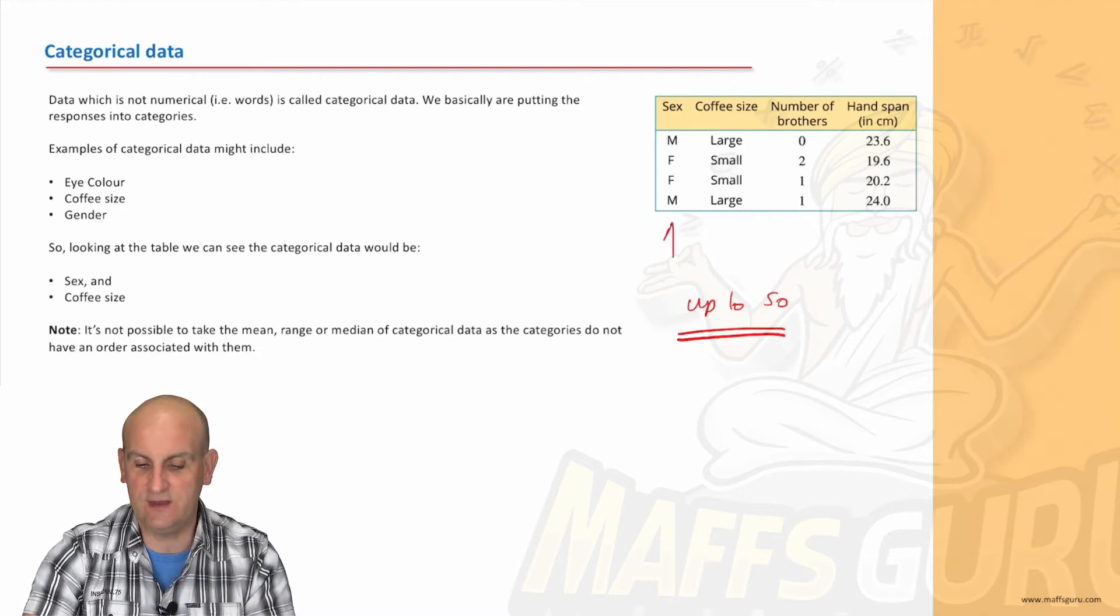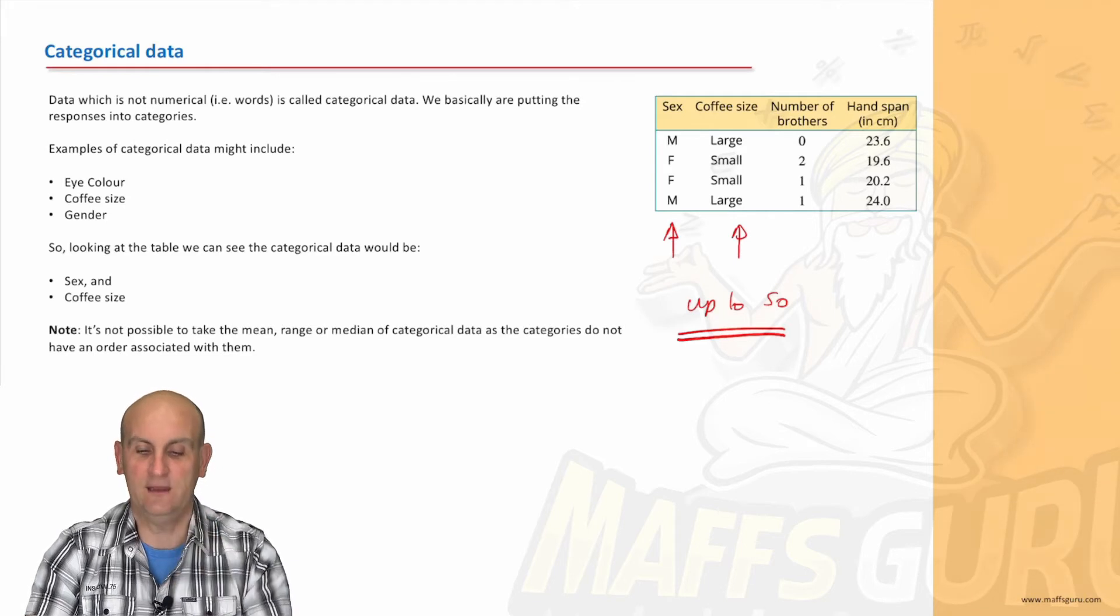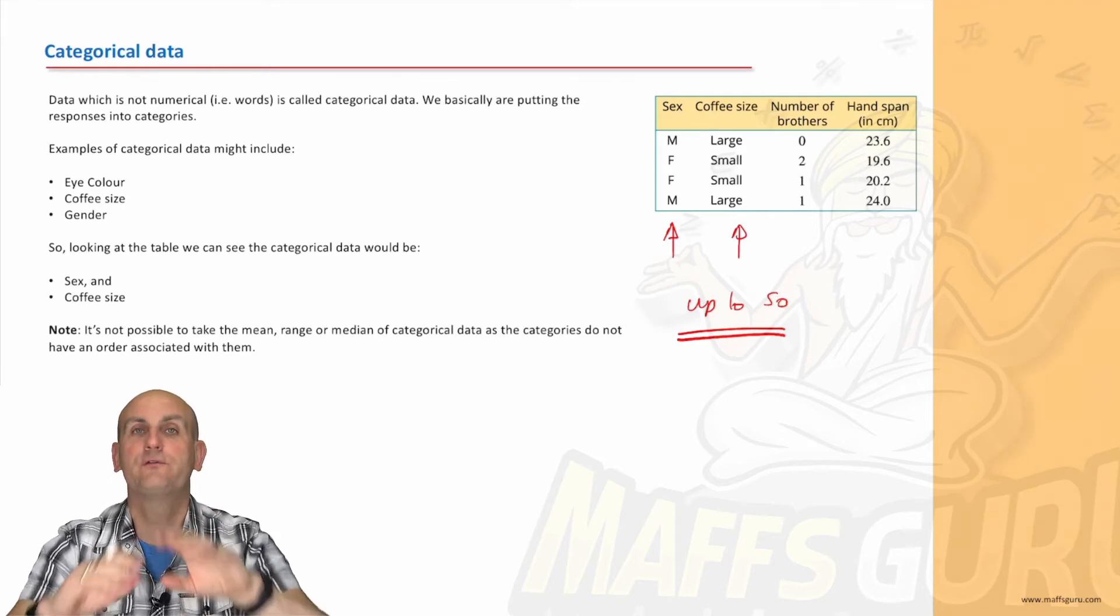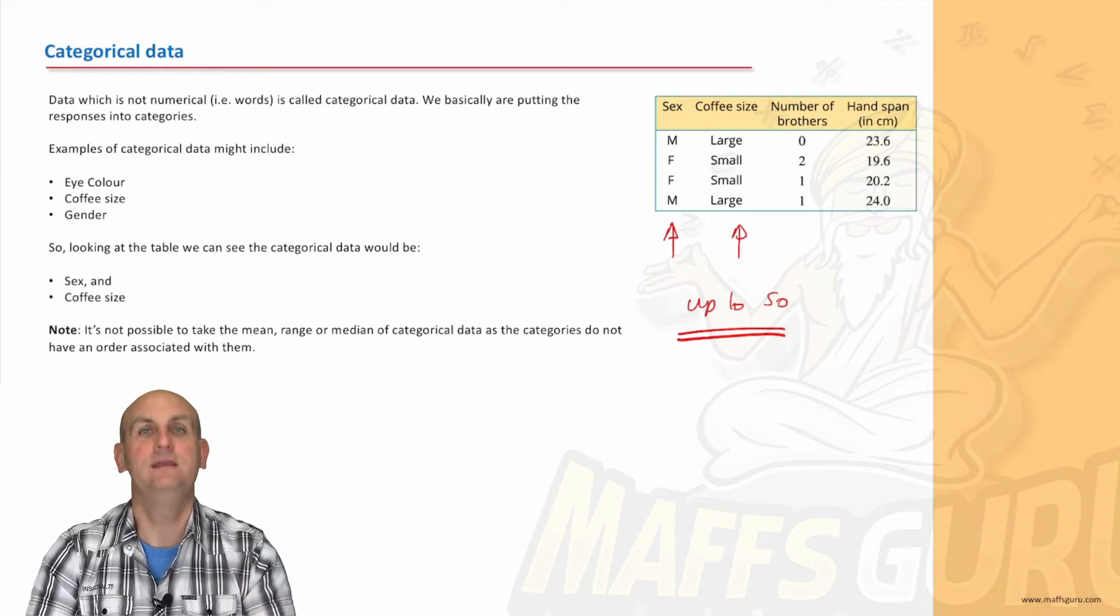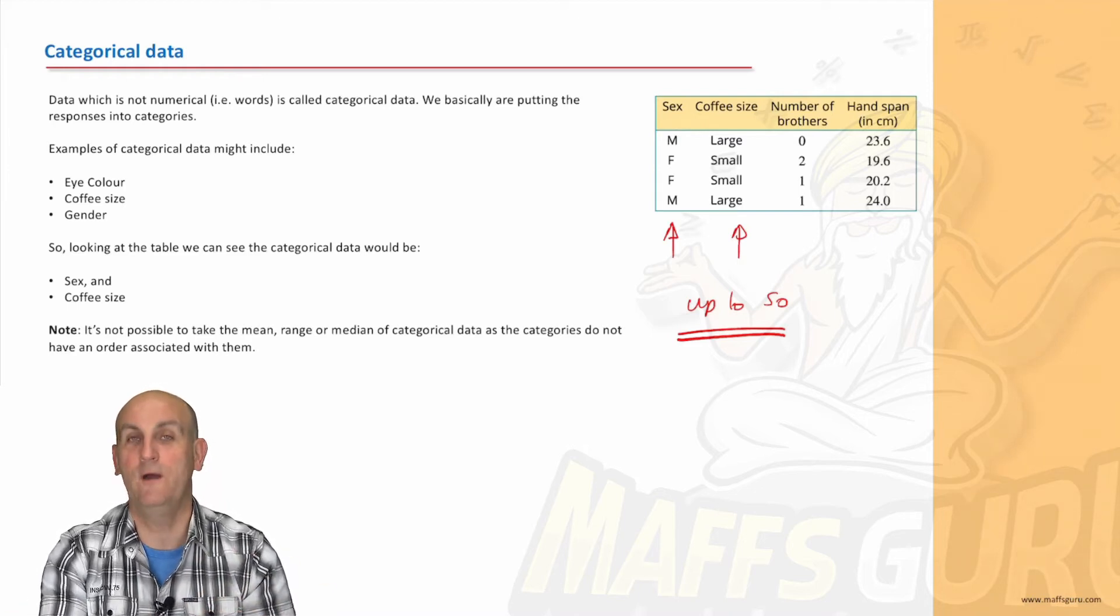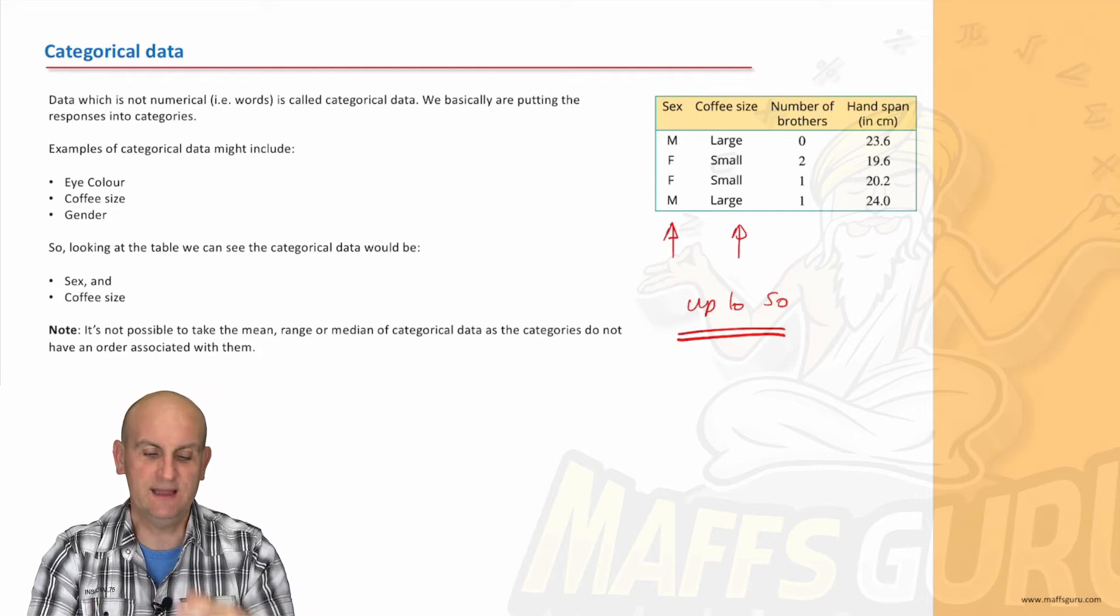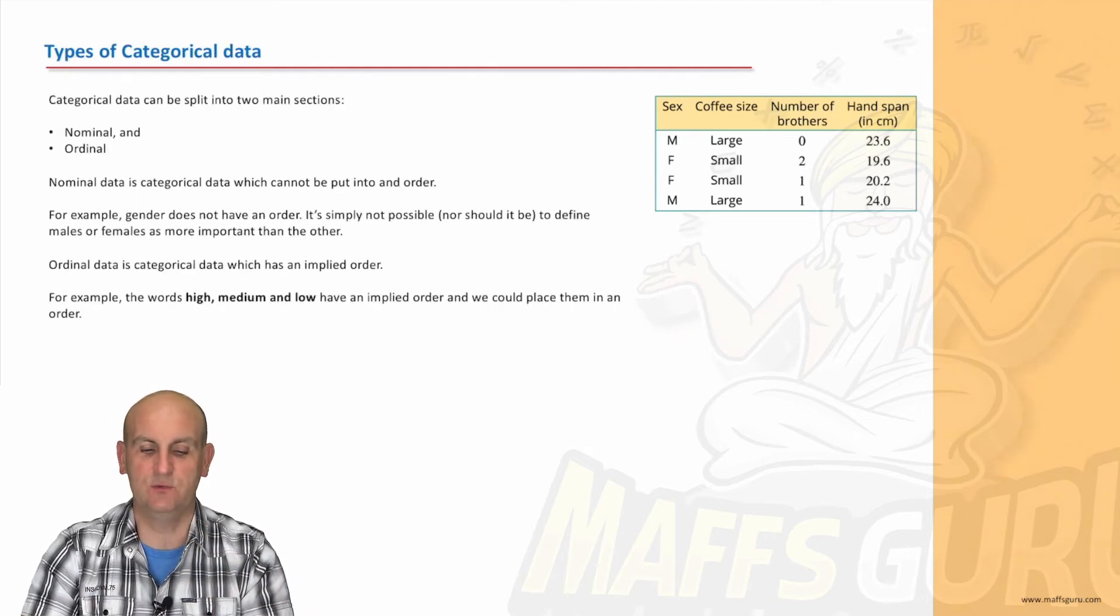So, looking at the data, we can see the categorical data then. The categories we have in here would be sex and coffee size. Why? Because those are the ones with words. Now, M and F, you'll say, oh, it's just a letter. Yes, it is. But M stands for male and F stands for female. So, that's categorical data, things with words in it.